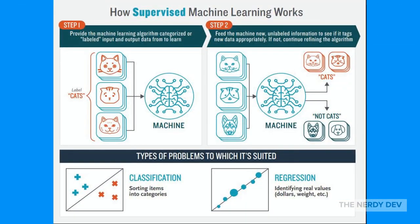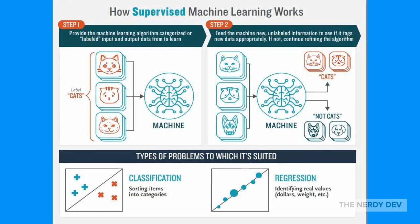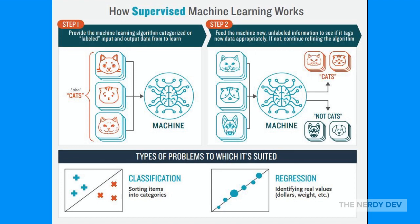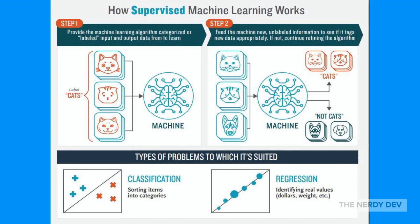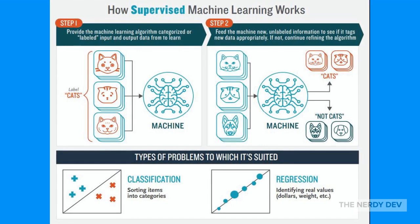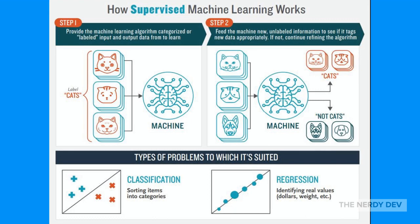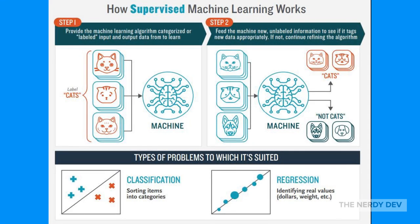Now let us learn about how supervised machine learning works. We have two techniques: classification and regression. In classification, it's a supervised machine learning technique where the output has well-defined and discrete labels. For example, if you are given images of animals, you should be able to correctly demarcate between animals based on the feature set — such as distinguishing between a cat and a dog.